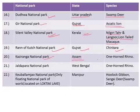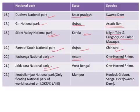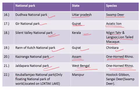Kaziranga National Park is in the state of Assam and is famous for the one-horned rhinoceros. Jaldapara National Park is situated in the state of West Bengal and is also famous for the one-horned rhino. Last but not least is the Keibul Lamjao National Park — the only floating national park in the world — located in the Loktak Lake in the state of Manipur.